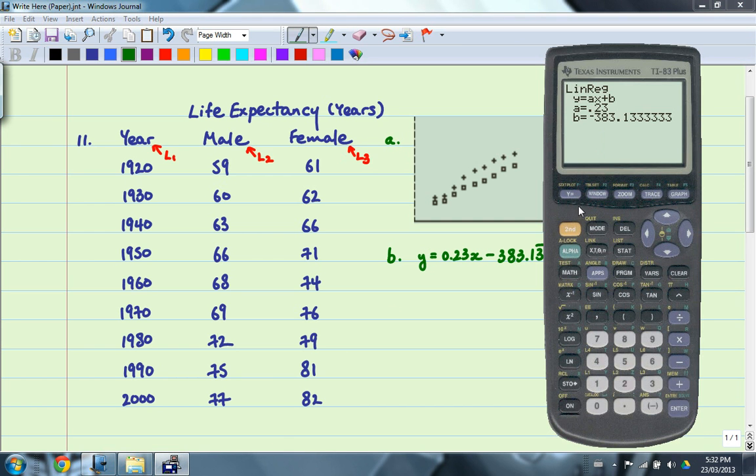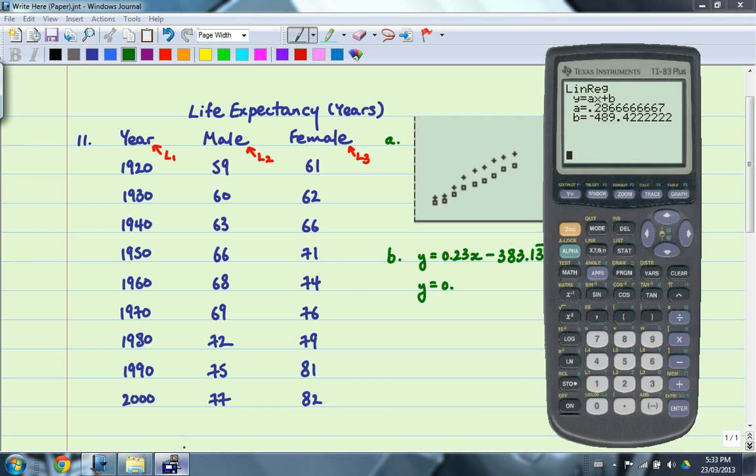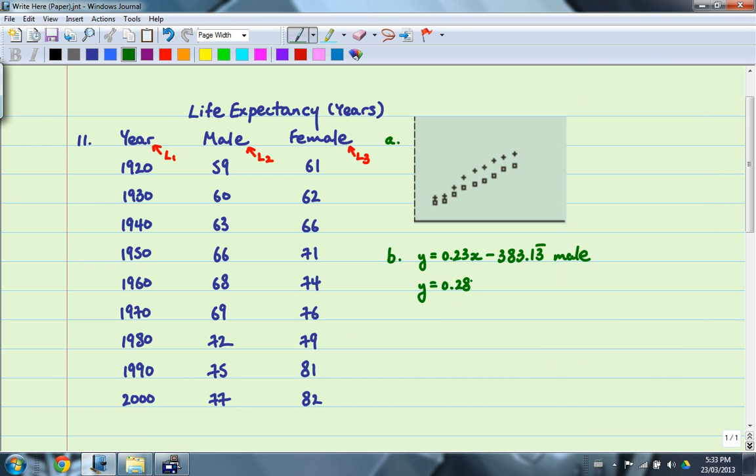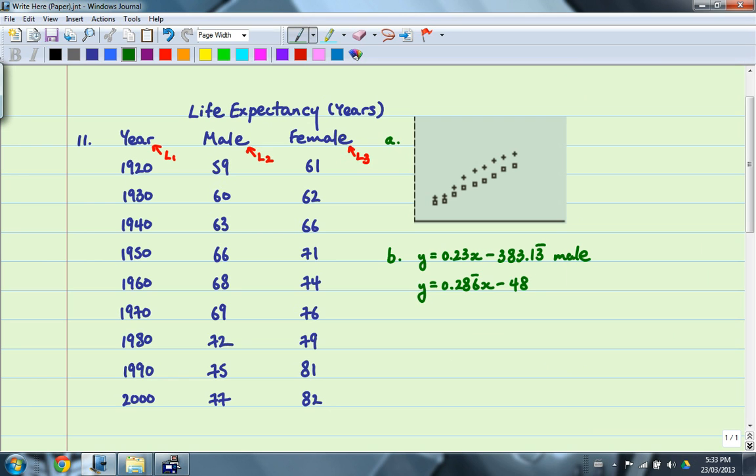And now for the female, same kind of thing. Let's go second and then enter, which brings up the last entry. The only thing that I need to change here is that instead of L2, which is the male life expectancy, I want L3. Press enter. Then that gives us the female life expectancies. So I'm going to go ahead and write that down. Y equals 0.286 repeated. X minus 489.42 repeated.